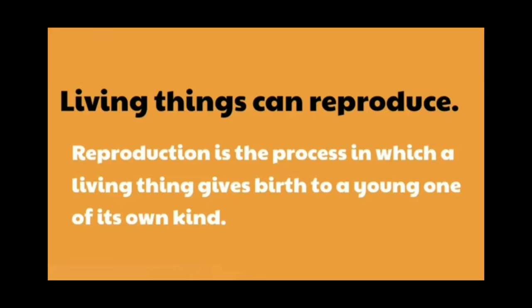Living things can reproduce, meaning living things have young ones. Reproduction is the process in which a living thing gives birth to a young one of its own kind. Non-living things do not have young ones.